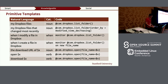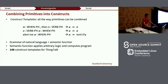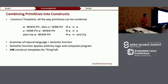Given primitive templates provided by Thingpedia contributors, we designed a language of construct templates that defines all the ways primitives can be combined. This is both a grammar of natural language and a semantic function that combines corresponding pieces of program. In the construct templates, you can say 'when [phrase], then [action verb phrase], do something' — corresponding to a When-Then-Action program — or similarly 'do something when something.' We have collected 146 construct templates written once and for all, while extensions of the system's capability come from primitives.